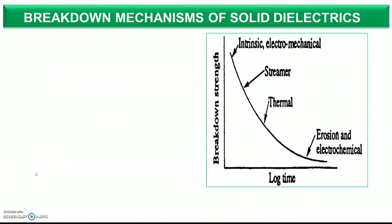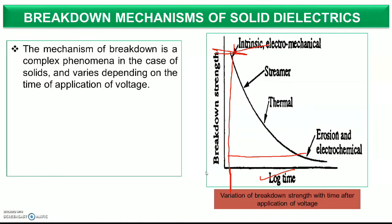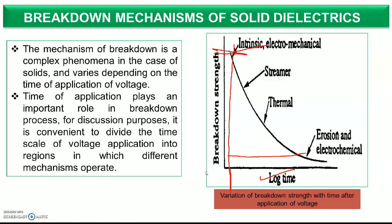Comparing the breakdown strength and lock time of different mechanisms: in erosion and electrochemical breakdown, the breakdown strength is quite low but the lock time is very high. In intrinsic or electromechanical breakdown, the breakdown strength is very high but the lock time is very small. So we can see that different breakdown mechanisms show variation with respect to time as well as with respect to voltage, depending on different material properties.